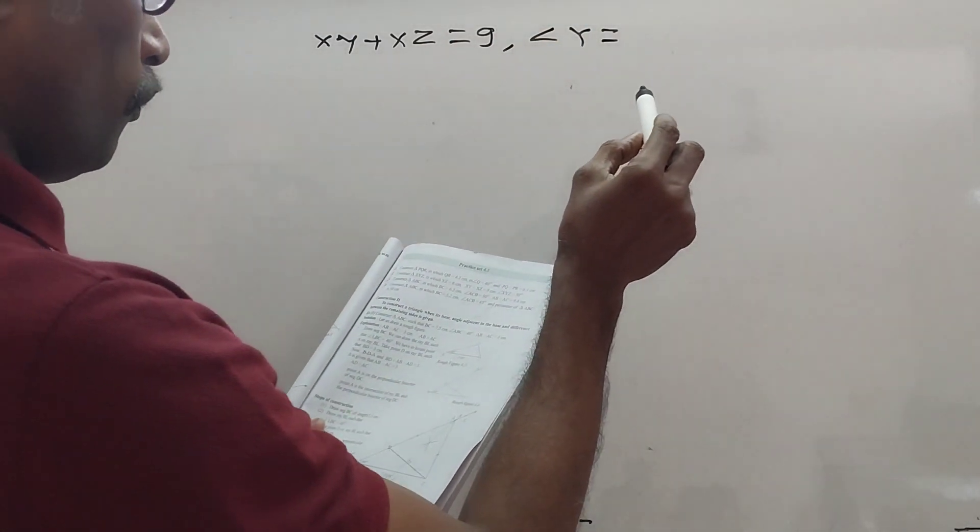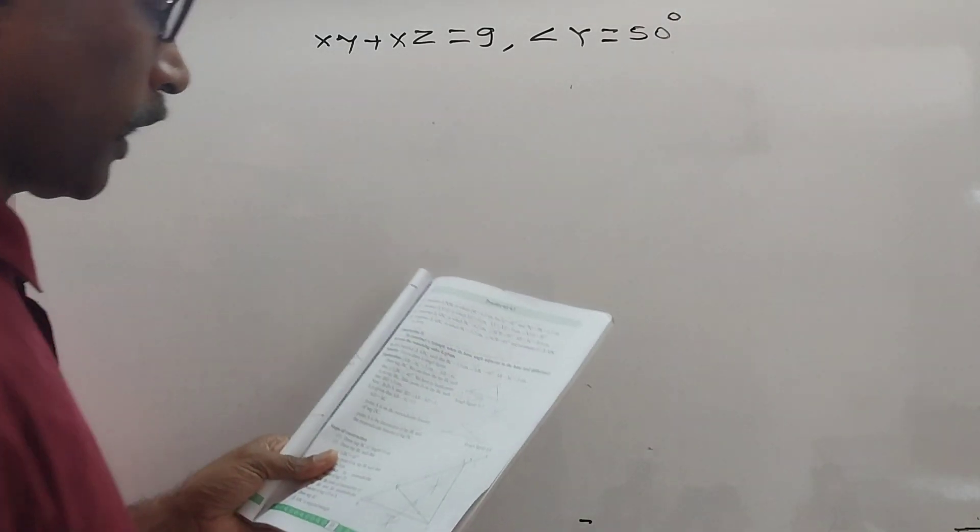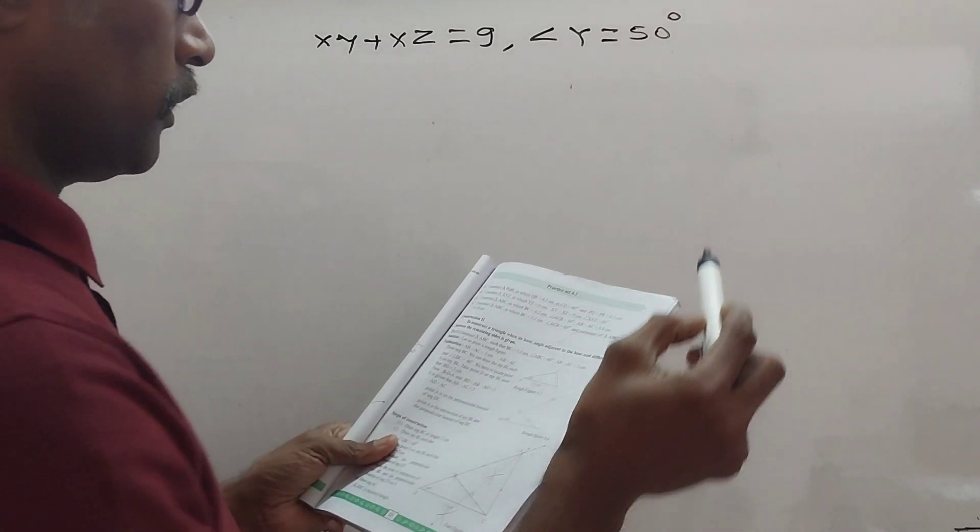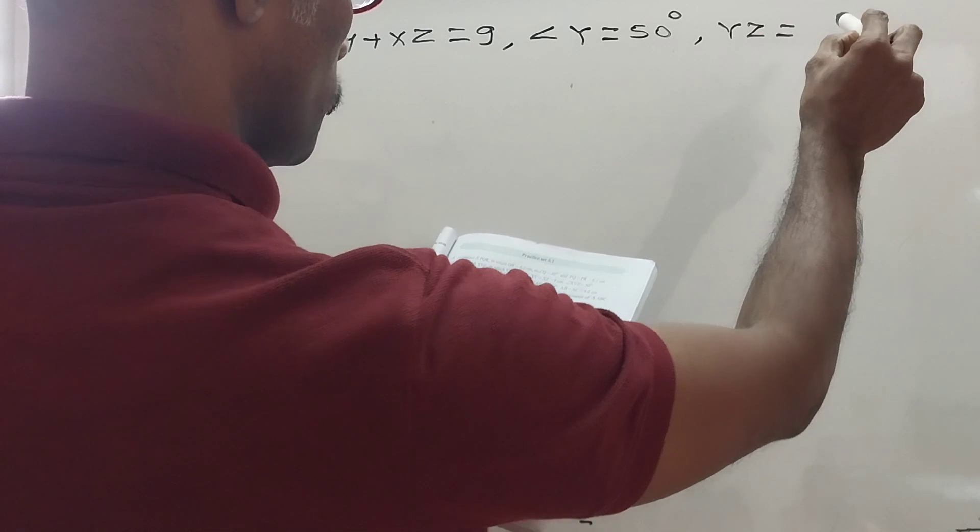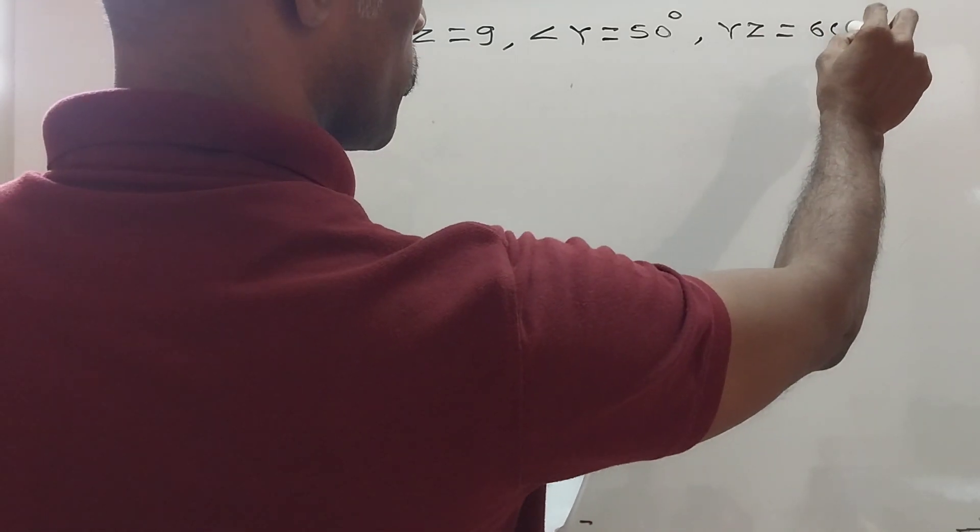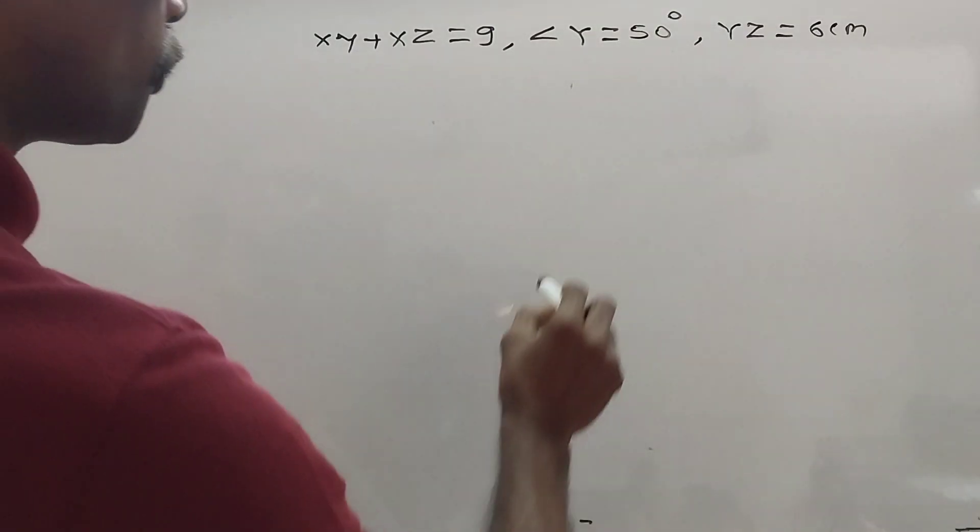Angle Y is equal to 50 degrees. XYZ means Y. And YZ is given as 6 cm. Did you understand? Now, I told you.